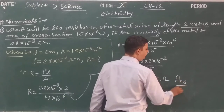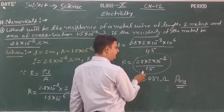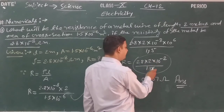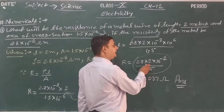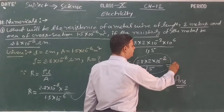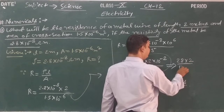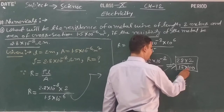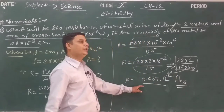So the answer of this numerical is R = 0.037 ohm. To solve this, we multiply 28 by 2, then divide by 15, and apply 10 to the power minus 2. You can write it as 28 × 2 upon 15 × 100. When you solve this step, you get the value of resistance.